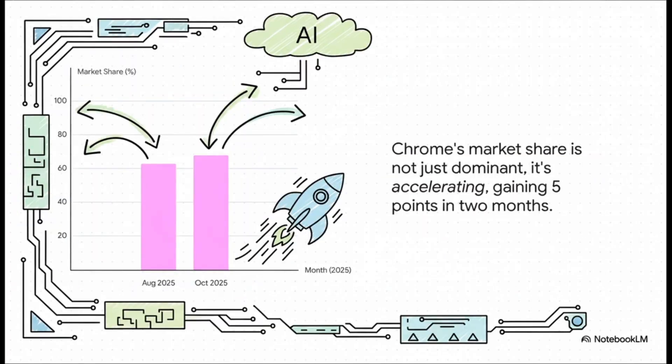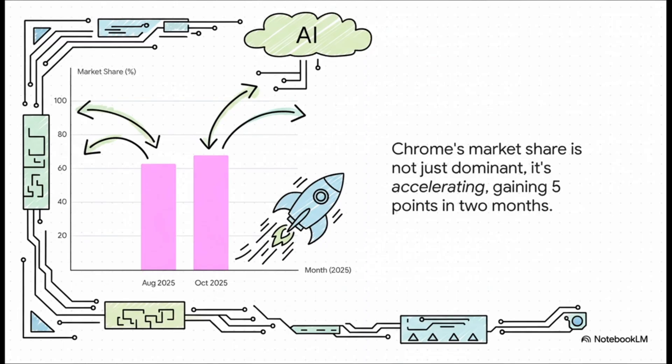Take a look at the browser market. Not only is Chrome completely dominant, but its market share is actually accelerating. It gained five percentage points in just two months. That's crazy. And on mobile, you guessed it, same story.